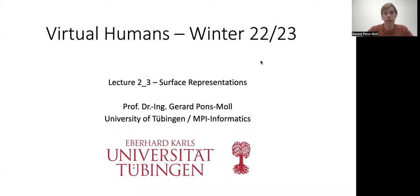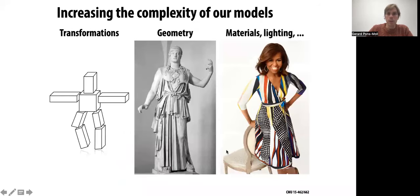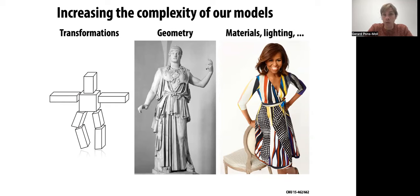Welcome to virtual humans lecture 2.3: surface representations. Today we're going to see different types of surface representations, and the goal of this lecture is that you understand the advantages and disadvantages of each representation. As briefly described in previous lectures, to model a virtual human you have to think about how to parameterize the motion — kinematic chains, rotations, transformations. The topic of this lecture will be on the geometry: how to model the shape of people, which is a very interesting and complex topic.